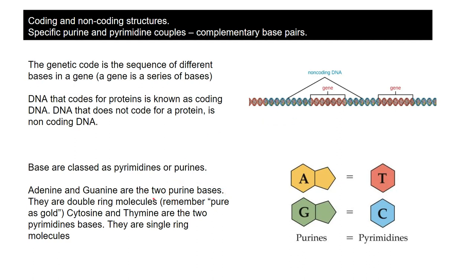For anyone doing higher level, we should look at classifying bases as being either pyrimidines or purines. Adenine and guanine are the two purine bases - they're double ring molecules. Remember the phrase 'pure as gold' - adenine and guanine are 'pure as gold.' Cytosine and thymine are the two pyrimidine bases - they're single ring molecules.